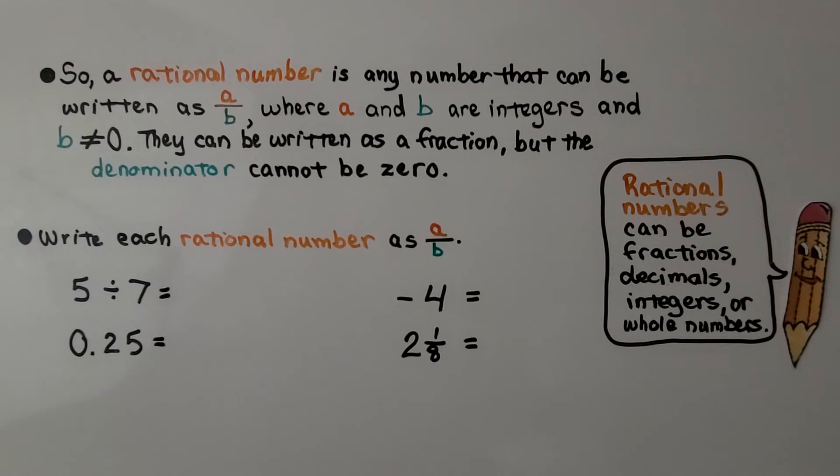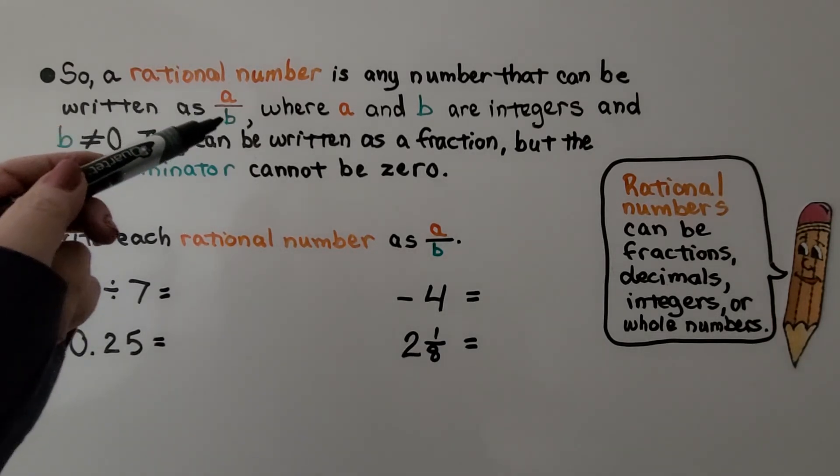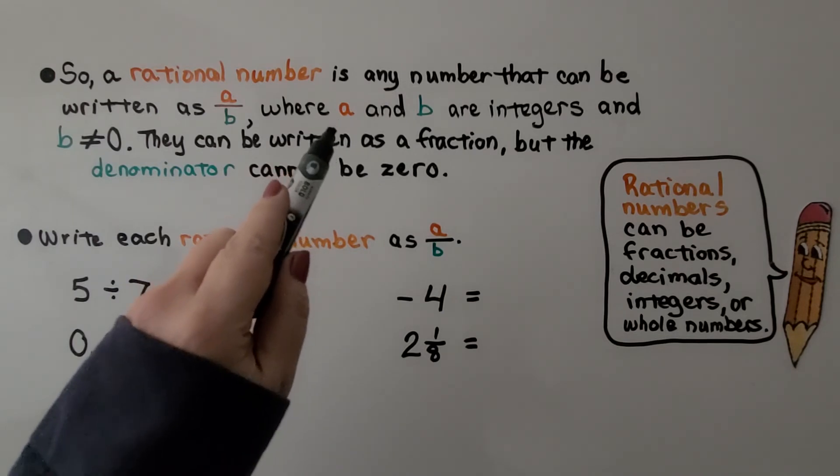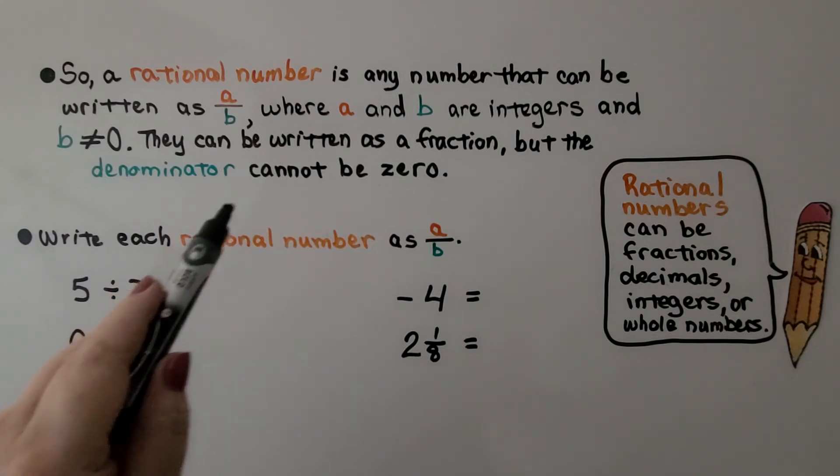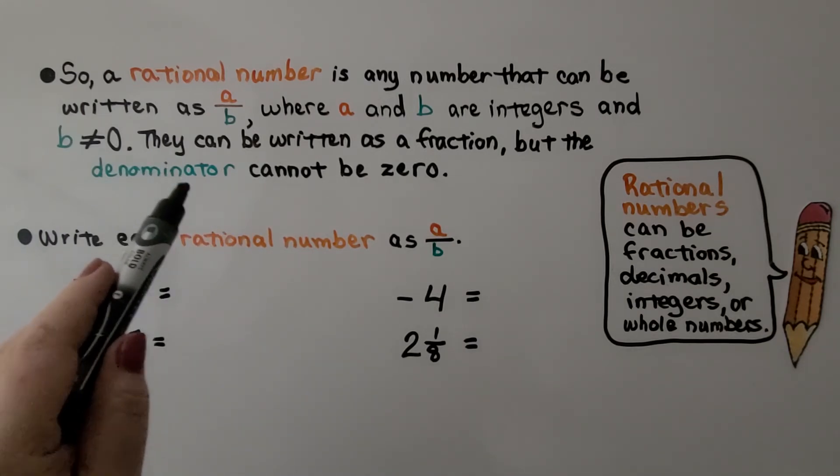So a rational number is any number that can be written as a over b, where a and b are integers and b is not equal to 0. They can be written as a fraction, but the denominator cannot be 0.